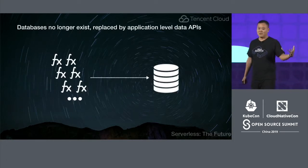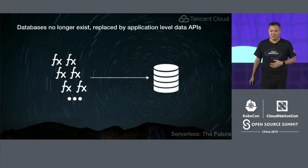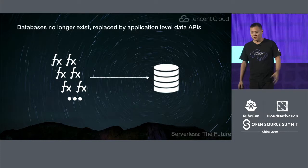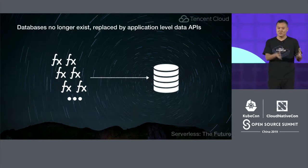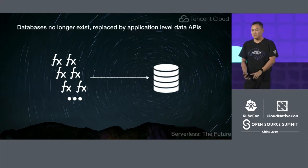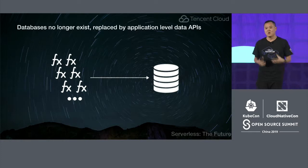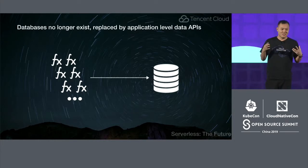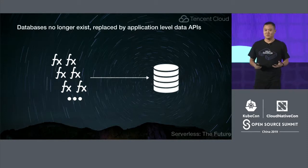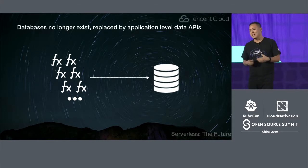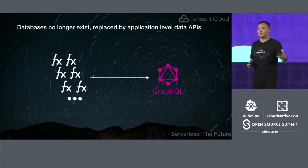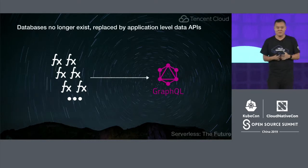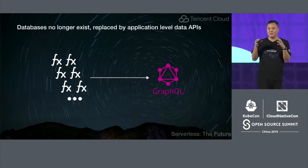The second thing is that databases will no longer exist — they're going to be replaced by application-level data APIs. One of the biggest problems with serverless today is I've got execution via function-as-a-service, but I need to access data. Even with serverless DB offerings, you have to go through NoSQL or SQL databases and manage connections or manage physical resources. You don't want to manage these resources. Additionally, nobody wants to write SQL statements on top of serverless — you want to model your application and data in a much more natural way. GraphQL is one of these technologies that's a first step into managing data at an application level, and we'll see a lot more growth in that area.